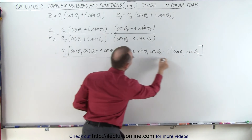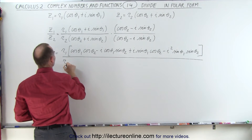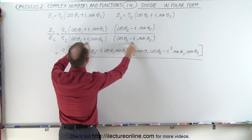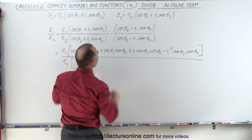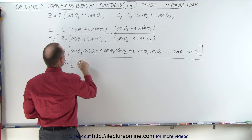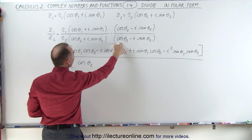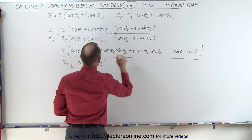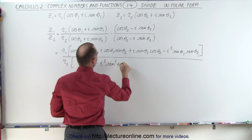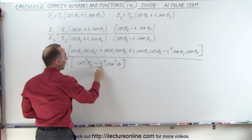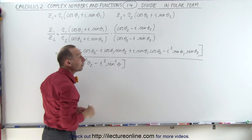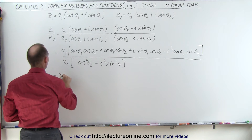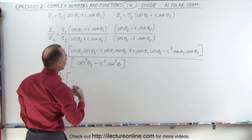Now we divide that by the denominator. We have r2 times — and that's why we took the conjugate — the middle term disappears because we have plus i sine theta 2 and minus i sine theta 2. In the denominator we end up with cosine squared of theta 2 plus sine squared of theta 2, and since i squared is negative 1 that makes it positive, so the whole denominator becomes 1. That means we're left with the ratio R1 divided by R2 times what we have in the numerator.